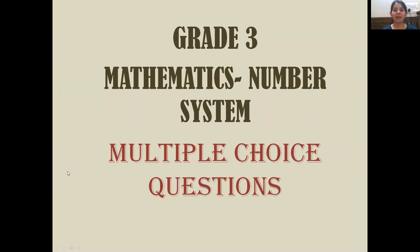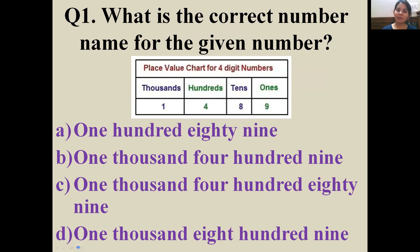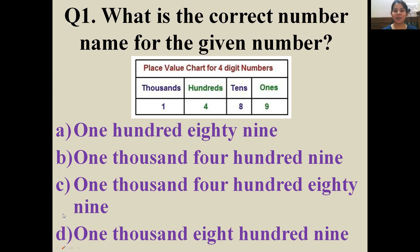Alright, Grade 3 Mathematics — Number System, Multiple Choice Questions. Let's get started. Question number one: what is the correct number name for the given number? A then chart is in front of you along with the places. These are the four options: A, B, C, D.